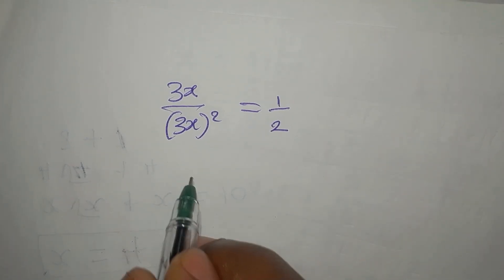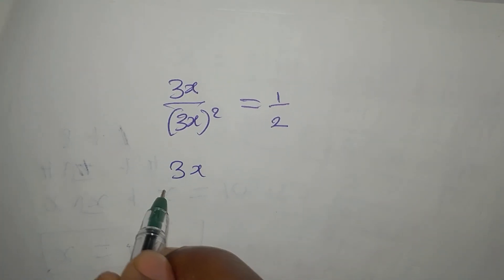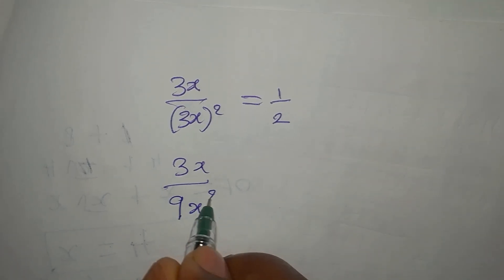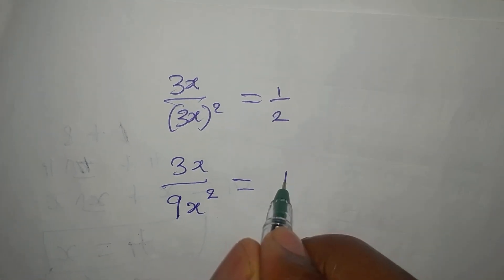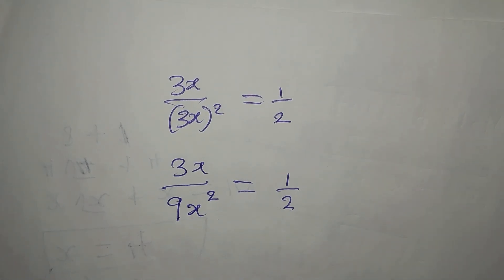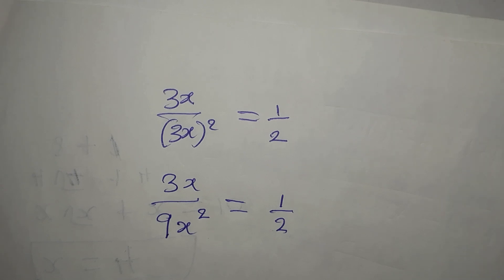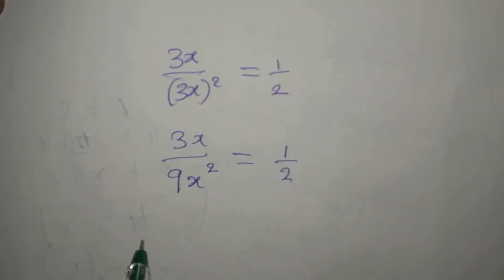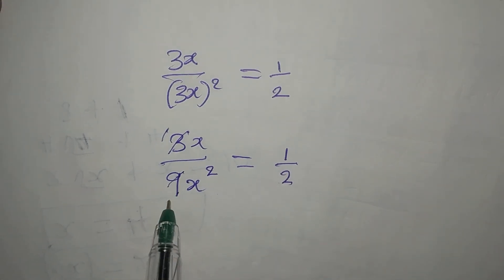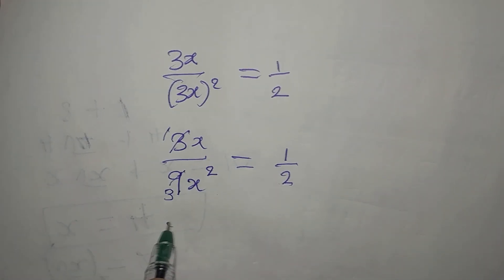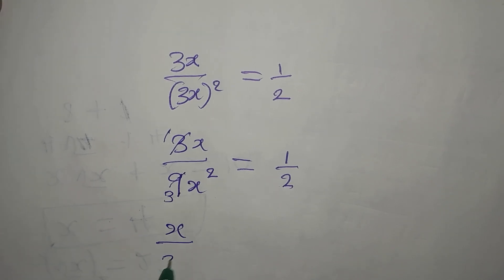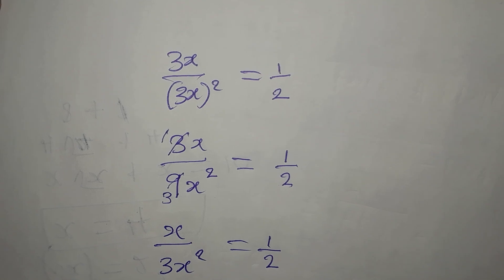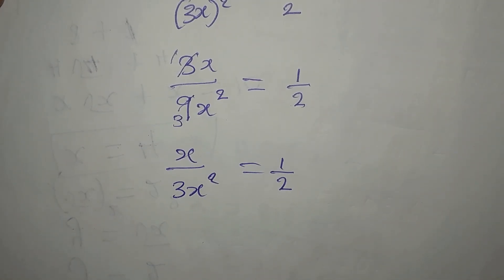This is the same equation. The first method I used is to cross multiply. What if I don't want to do that? I'll now have 3x over the expansion of the denominator, which will give us 9x squared, and that equals 1 over 2. Now I can decide to reduce this. 3 will go there one time, 3 will go here 3 times. So we have x over 3x squared equals 1 over 2.